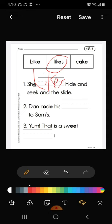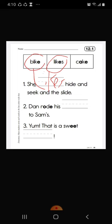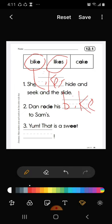Let's move to the next. Dan rode his dash to Sam's. Dan rode his bike. Let's circle it. His bike. Dan rode his bike to Sam's.